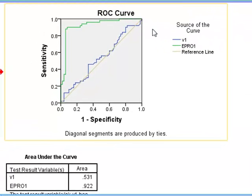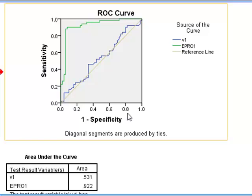The ROC curve shows the ability of a particular variable to predict which group an individual is in. In predicting a particular state, we would like the probability of a true positive to be 1 — which is the sensitivity — but we would also like the probability of a false positive to be close to 0, which is equal to 1 minus the specificity. So we want a 1 on the y-axis and a 0 on the x-axis, meaning we would like the data to reach the top left-hand corner for an ideal test.